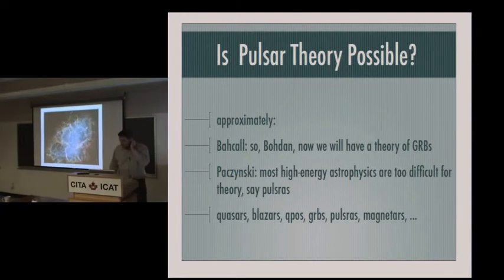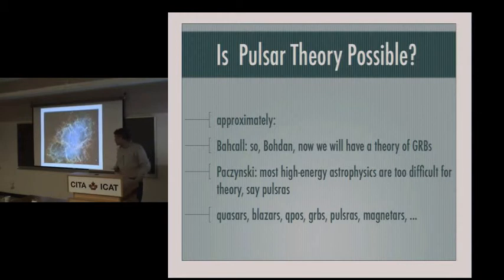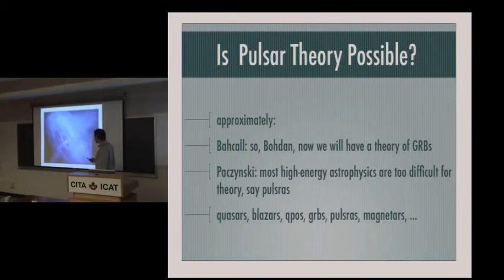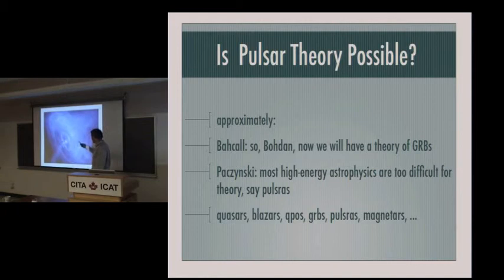I want to talk about pulsars today — mostly pulsar theory — but to begin with, let's recall the observables. This, of course, everybody recognizes as the Crab Nebula as seen by Hubble. The various colors are showing different emission lines and therefore different elements. If we zoom in a little bit and switch to X-rays, we see yet another famous picture, which is loosely suggestive of some combination of outflows and rotation. If you go online and look for a high-resolution animation, this thing can be animated, giving time dependence that strengthens this feeling of outflow combined with rotation.